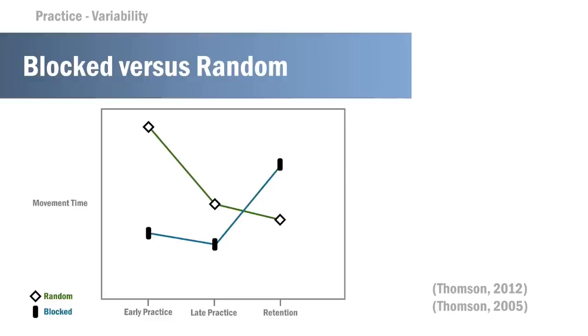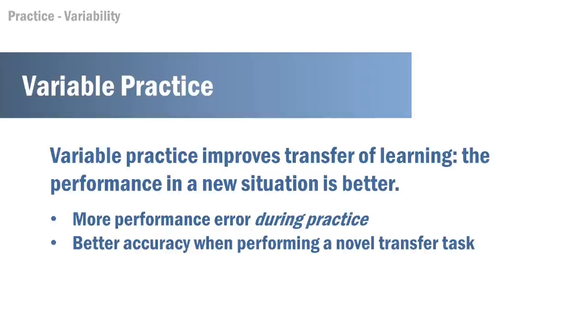So what improves immediate performance is not necessarily what improves retention over the long run. The open diamond represents random practice and the black rectangle represents blocked practice. With early practice, movement time is shorter showing better performance with blocked practice. But in terms of retention, the individual who practiced with random variable practice showed improved long-term retention and could perform that skill better. So variable practice improves transfer, generalization, adaptation, and long-term outcome, even though the variability produces more performance errors during initial learning.